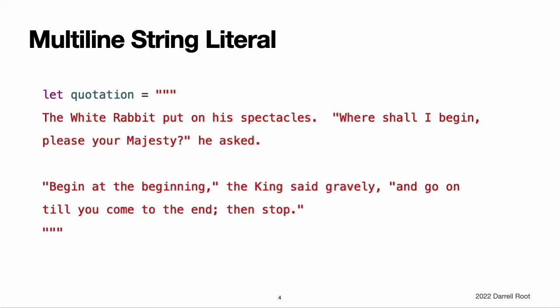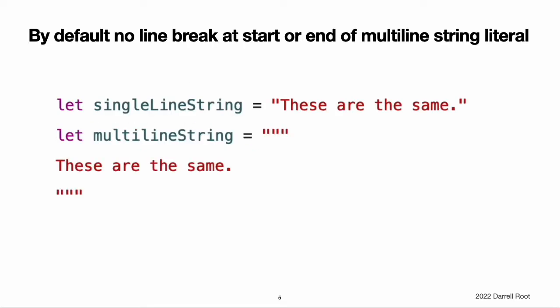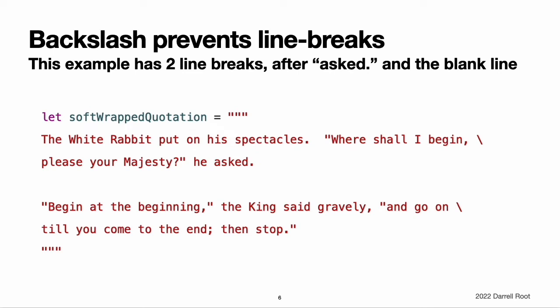Multi-line string literals. If you need a string that spans several lines, use a multi-line string literal — a sequence of characters surrounded by three double quotation marks. A multi-line string literal includes all of the lines between its opening and closing quotation marks. The string begins on the first line after the opening quotation marks, which means that neither of the strings below start or end with a line break. When your source code includes a line break inside of a multi-line string literal, that line break also appears in the string's value.